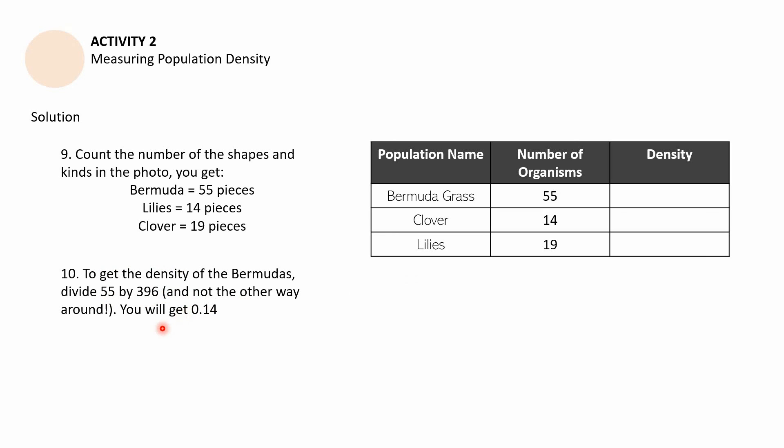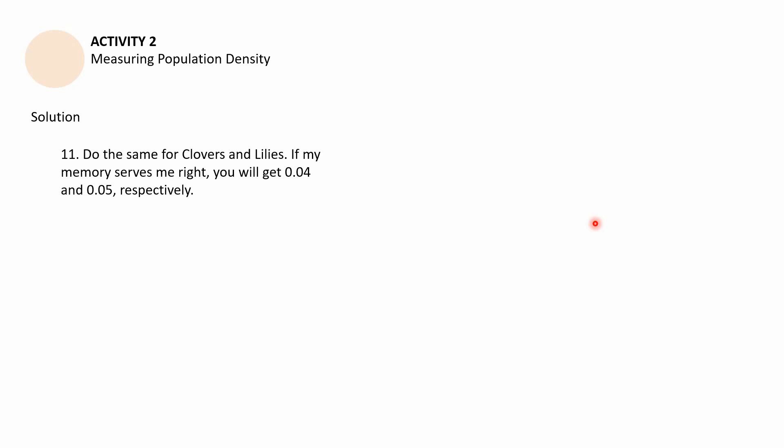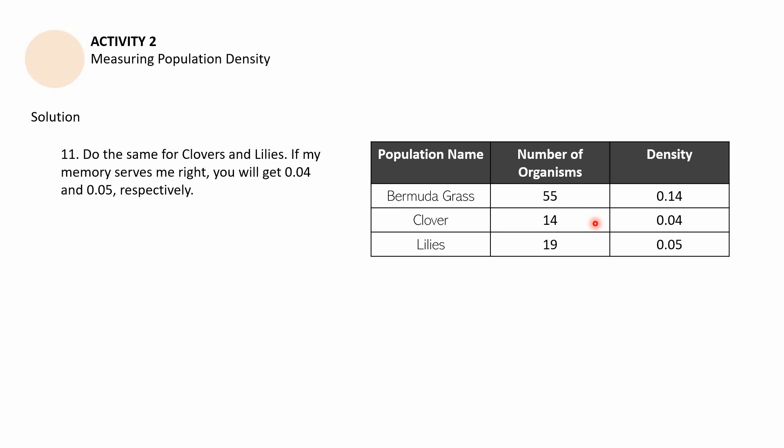And what you'll get is going to be 0.138. It's going to be rounded into 0.14. And then you will be doing the same for the clovers and the lilies. And again, if my memory serves me right, you will get around 0.04 and 0.05 respectively. Now, if Sir CJ made a mistake about this, it's possible that the lilies is actually 14 and the density is 0.04. And then the clovers are actually 19 and then the density is 0.05. In other words, I'm giving you these answers, but I am also encouraging you to please try it on your own to confirm it.